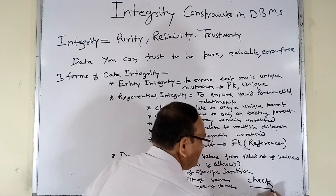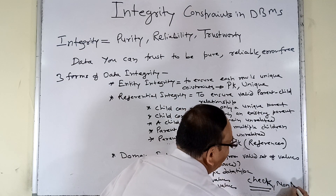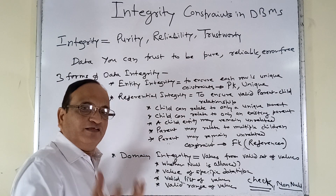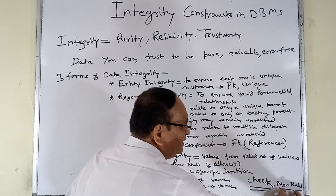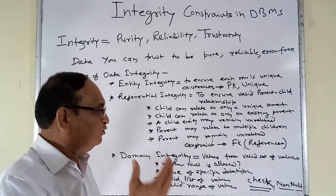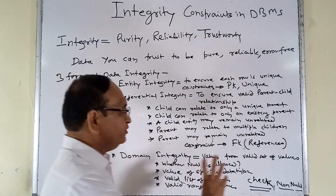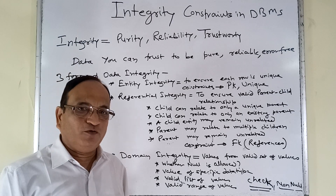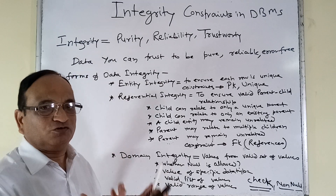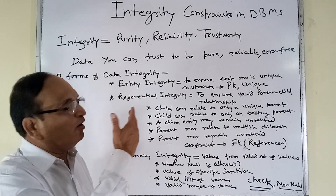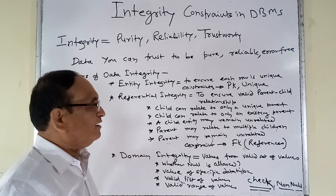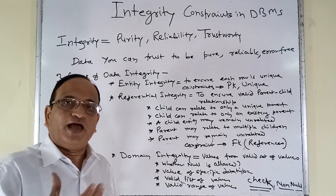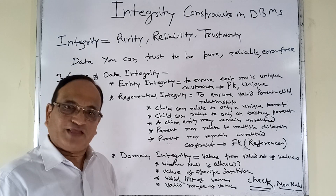Domain integrity is implemented through the check constraint. An extended check is the not null constraint — when the question arises whether null is allowed or not, if null is not allowed we designate that column as not null, forcing the user to input a value. So there are two constraints in domain integrity: check and not null. That's all for this part. In the next part we will be creating the actual constraints along with tables to demonstrate how they behave. Please check the description for interview questions on this topic and share your answers in the comments. Thanks for watching, bye bye.